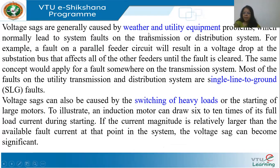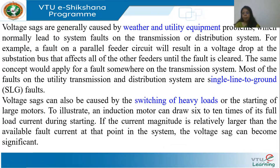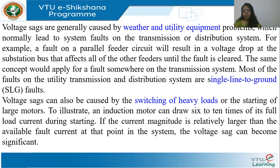Sags are typically caused by weather leading to system faults — very hot weather can cause lines to sag, touch a tree, and cause a short circuit or single line-to-ground fault, which causes a voltage sag in one phase. Switching on a heavy motor also causes a voltage sag because the motor draws a huge starting current — process industries use motors up to 5000–10,000 HP that can draw 10 times normal current.